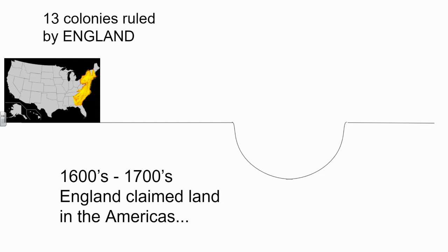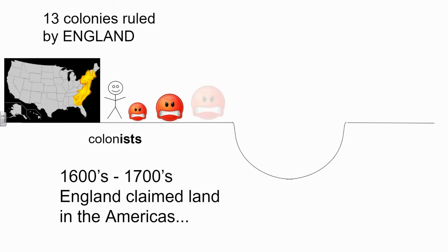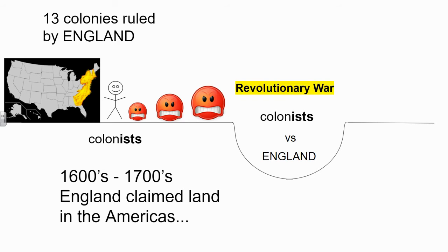They're actually going to claim it colony by colony for a total of 13 colonies. Since England is the country claiming that land, those 13 colonies are ruled by the King of England, and the people living in those 13 colonies are called colonists. Those colonists living in England's 13 colonies start to get angry at the way they're being treated by the King of England and the rules and laws that they're making them follow.